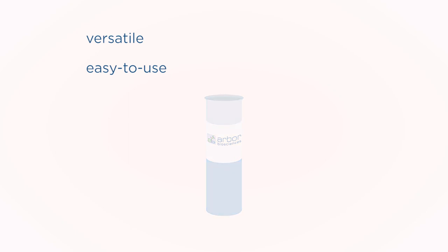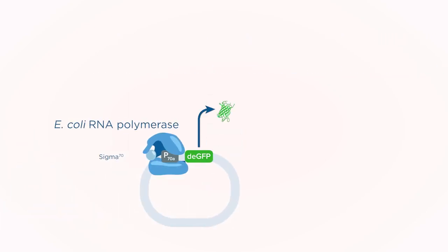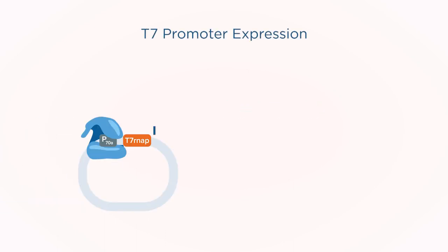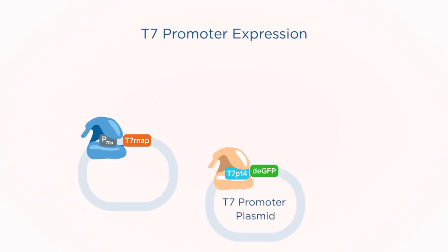My TXTL master mixes harness E. coli's core RNA polymerase and its primary sigma factor 70 to initiate transcription, but are also compatible with T7 promoter DNA constructs.